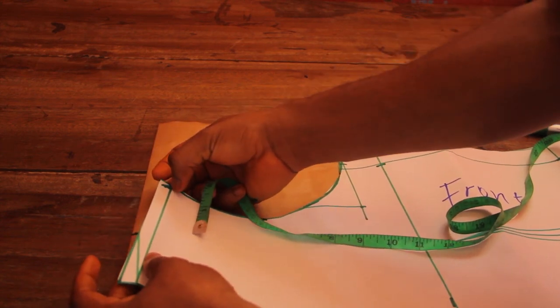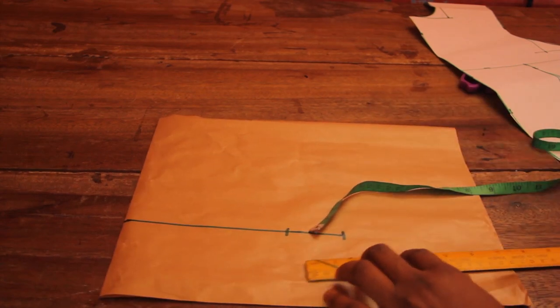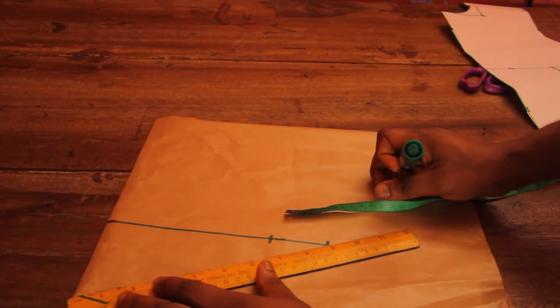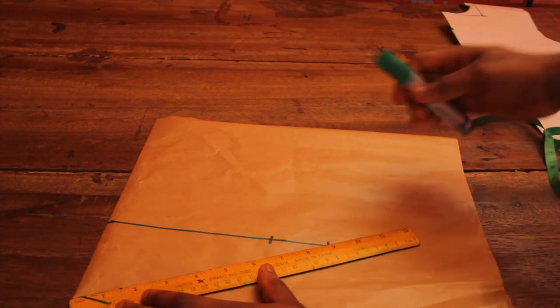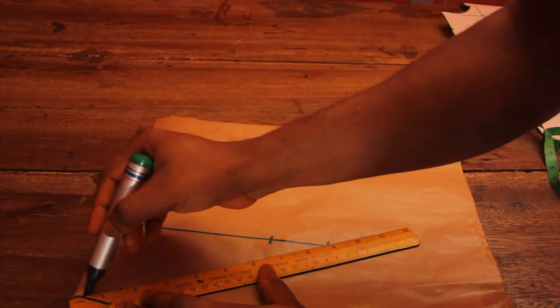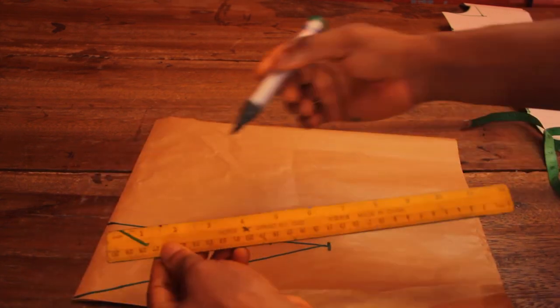Now I'm going to rule the straight line from the top of the paper, from the top of my sleeve cap to the bottom of my allowance.